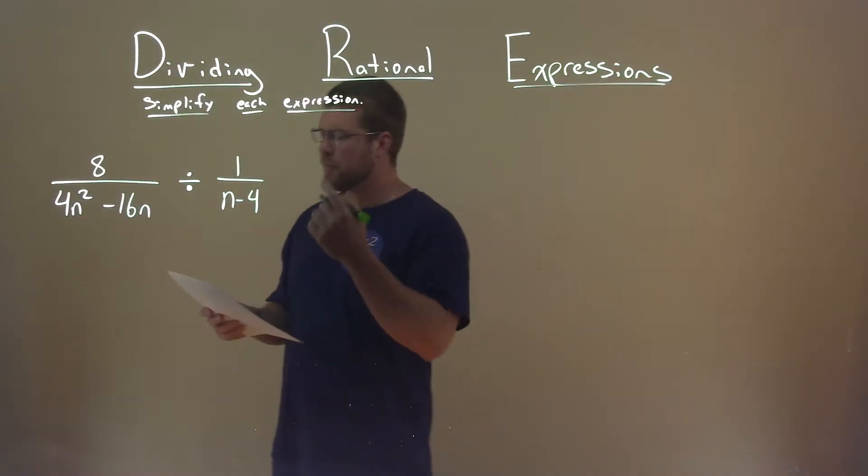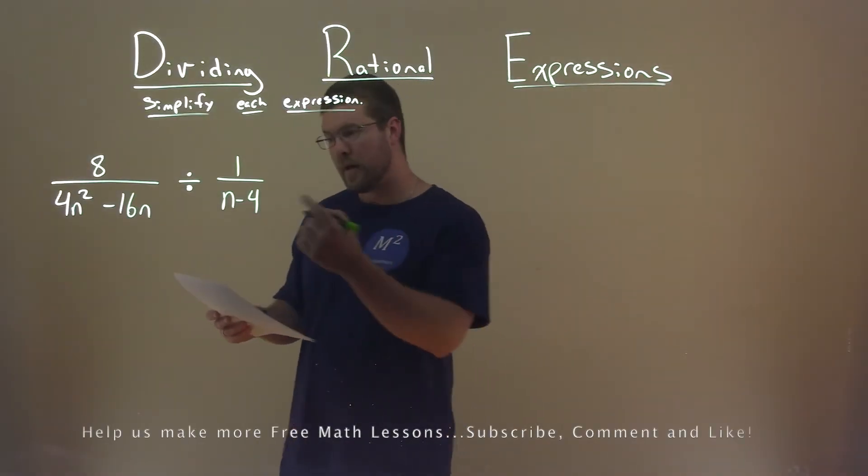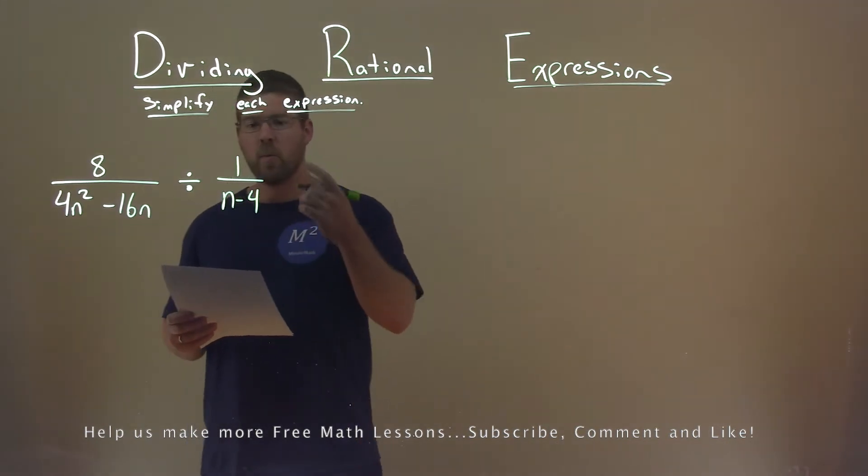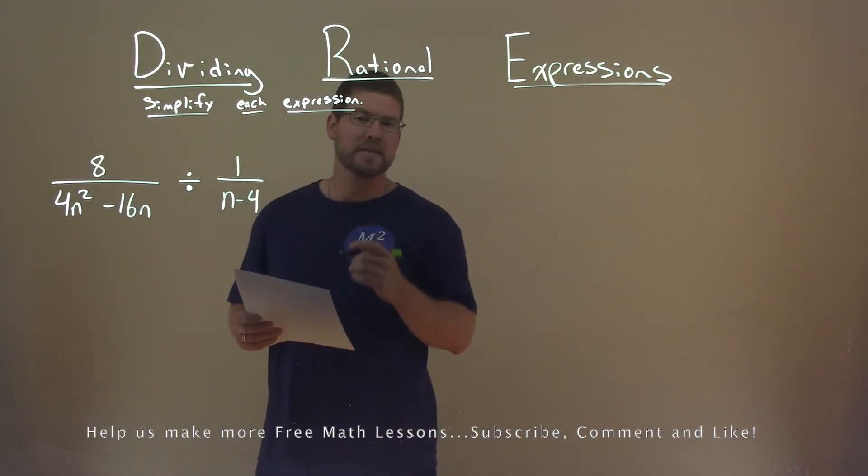We're given this problem right here: 8 divided by 4n squared minus 16n, divided by 1 over n minus 4, and we want to simplify this expression.